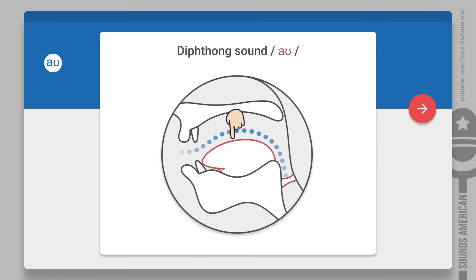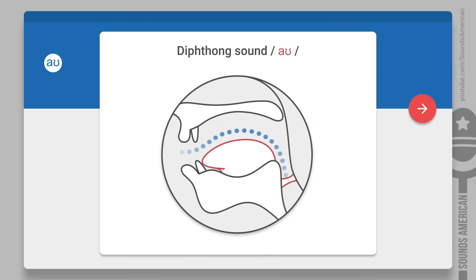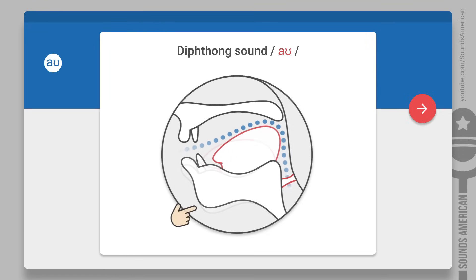Place your tongue very low in your mouth. The tip of your tongue should be touching the back of your bottom front teeth. Next, connect the AH to the UH sound. Smoothly move your jaw up until your mouth is almost closed. Then pull the back of your tongue toward your throat.